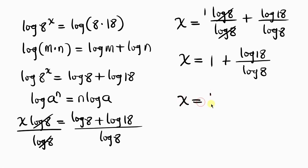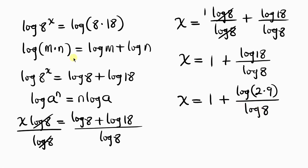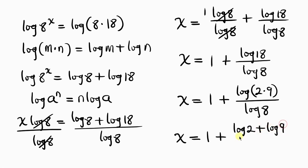Now, log 18 — since 18 is 2 times 9 — we can apply the law of logarithm. So we have x equal to 1 plus, on the numerator, log 2 plus log 9, all over the denominator log 8.